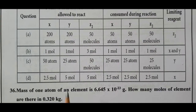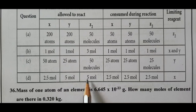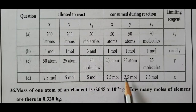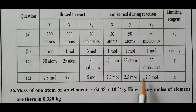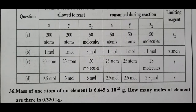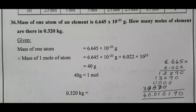The last case: 2.5 moles of X, 5 moles of Y, 5 moles of Z2. The lowest value is 2.5 moles. So 2.5 moles of X, Y, and Z2 undergo reaction. X becomes 0, so X is the limiting reagent. Question number 35 is complete.